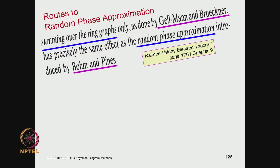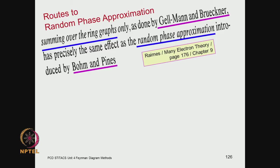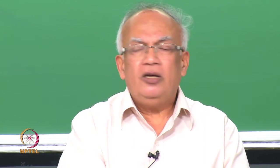There are actually different routes to the random phase approximation. One can do the Gellmann-Bruckner formalism, in which the Feynman diagrams look like ring diagrams — there will be loops and rings that you will see when we develop this formalism in the next one or two classes. You have these ring graphs but also other graphs which are not expressible as ring diagrams, and the process of linearization involves the exclusion of non-ring diagrams and retention of the ring diagrams.